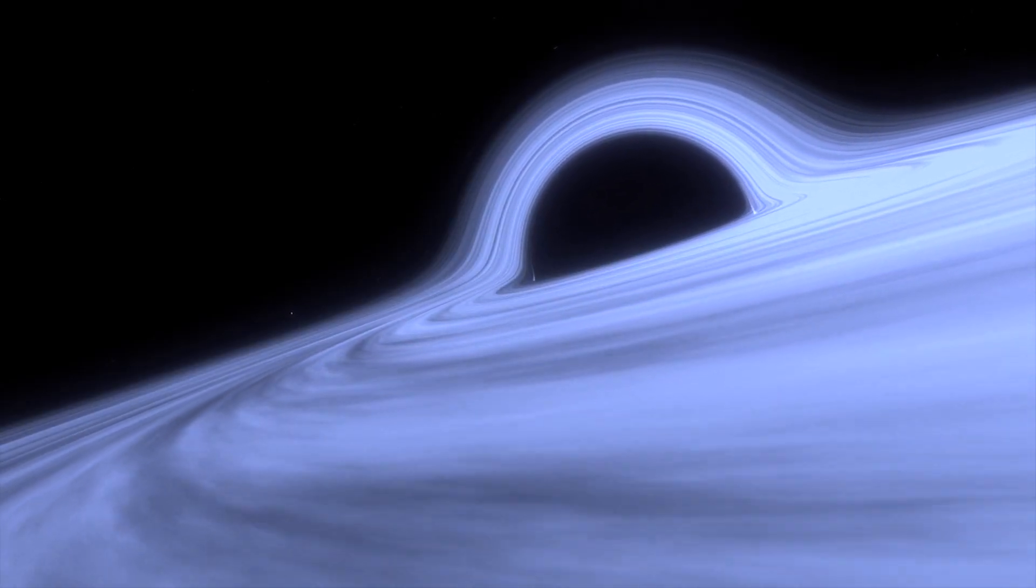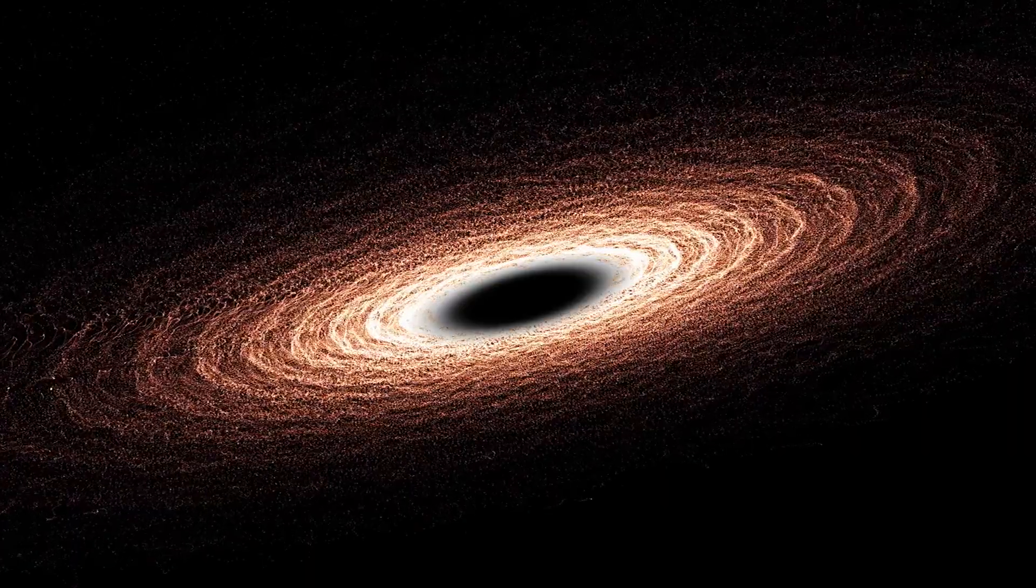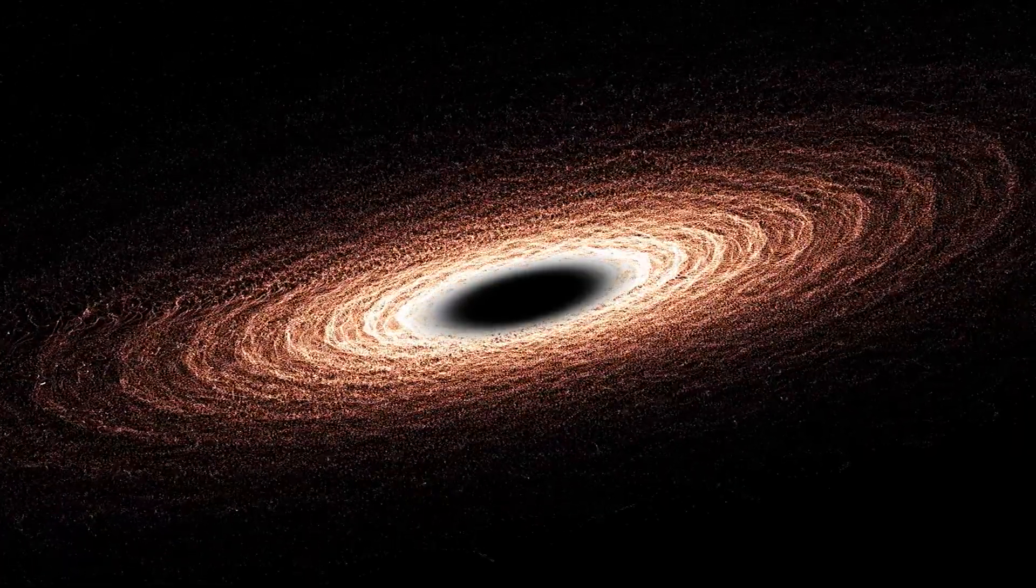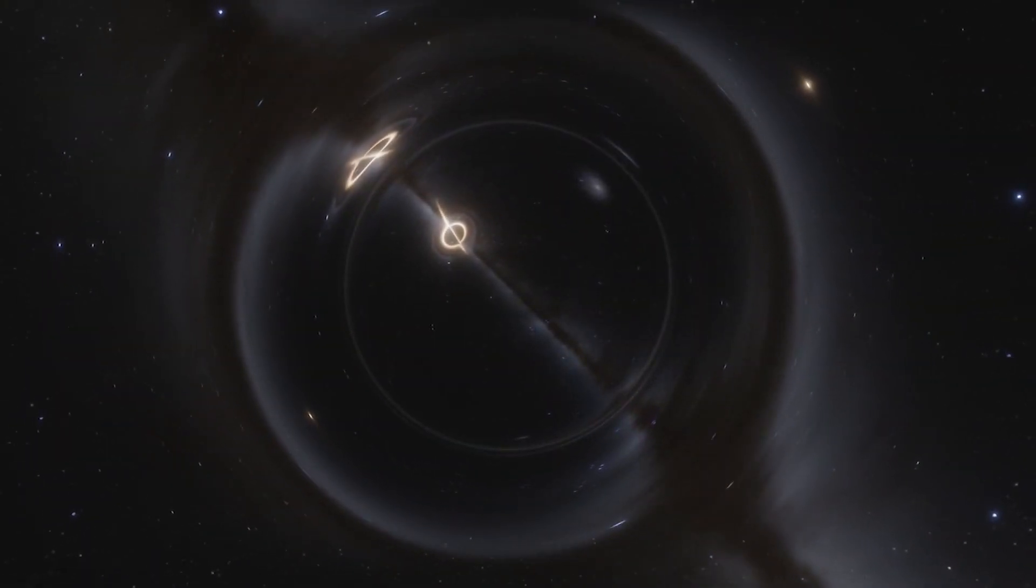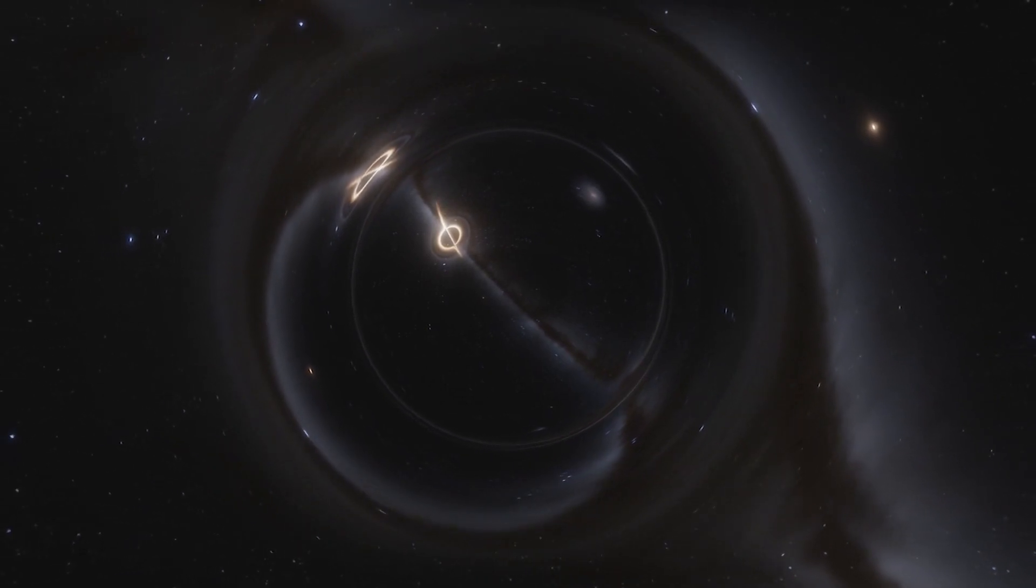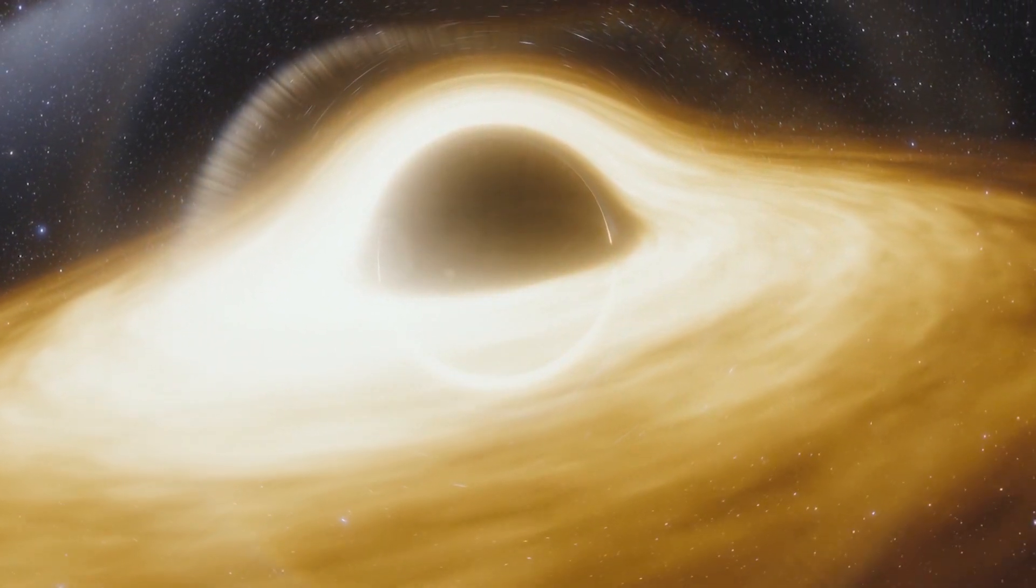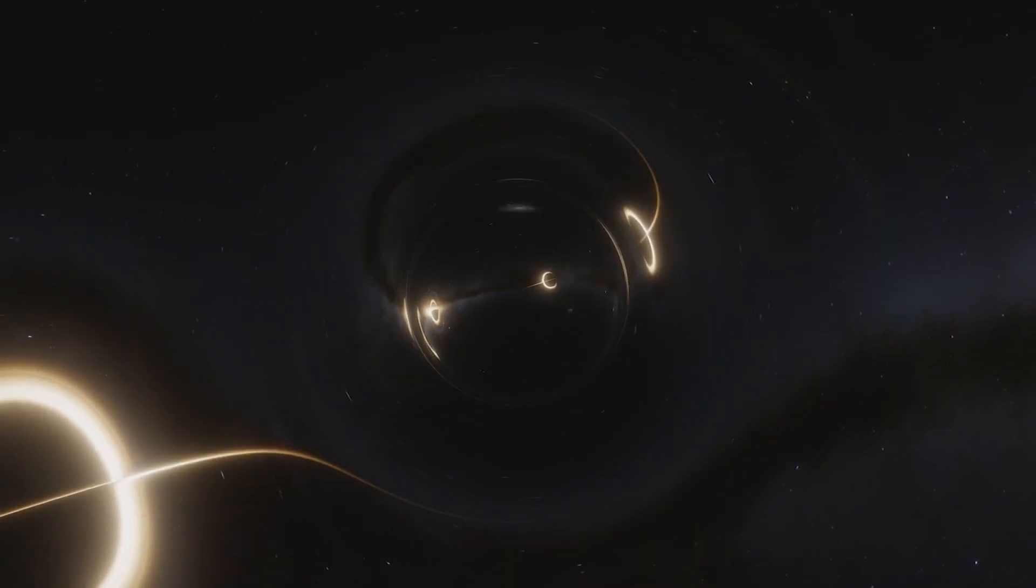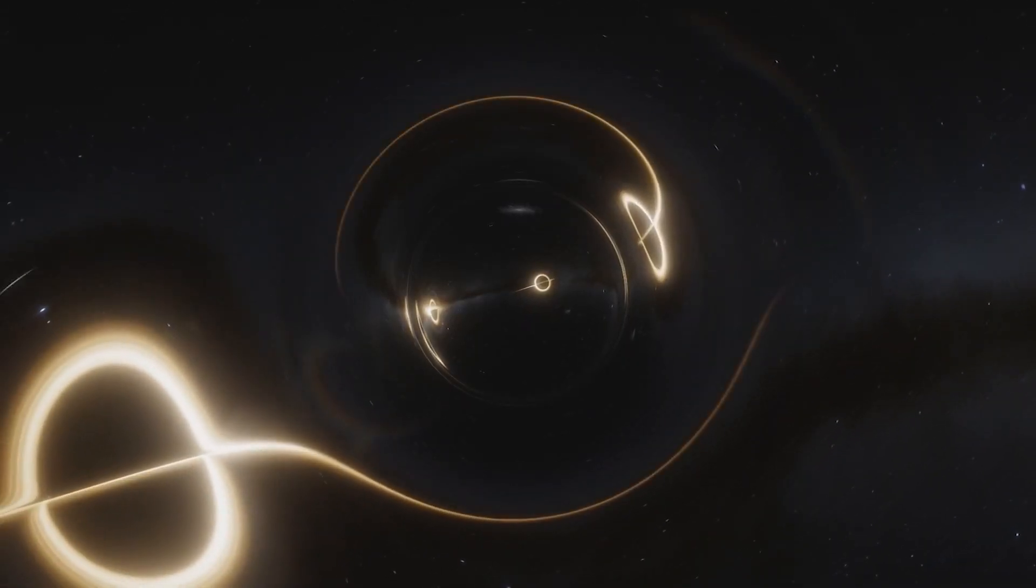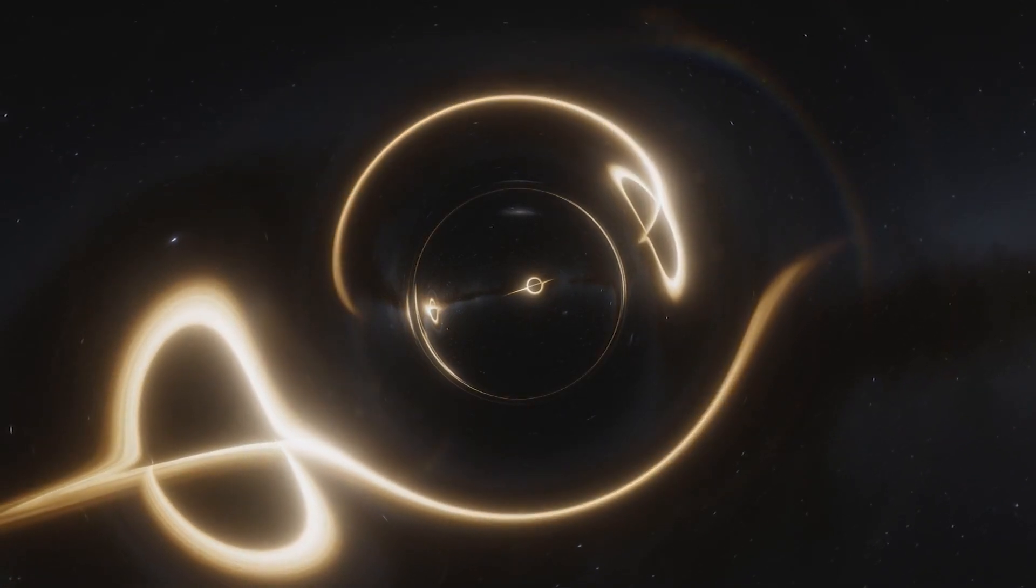Black holes are one-way trips. Once someone crosses their boundaries, known as event horizons, they can't ever escape. While black holes were once considered just a trick of Einstein's equations, astronomical observations eventually revealed that black holes do exist in the universe. So maybe the same could be said of wormholes.